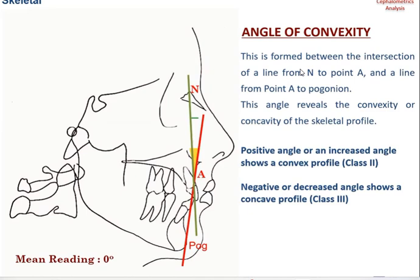The next skeletal parameter is the angle of convexity, formed between a line from nasion to point A and a line from point A to Pogonion. A positive or increased angle is seen as a convex profile or Class II. A negative or decreased angle indicates a concave profile as seen in a Class III malocclusion.